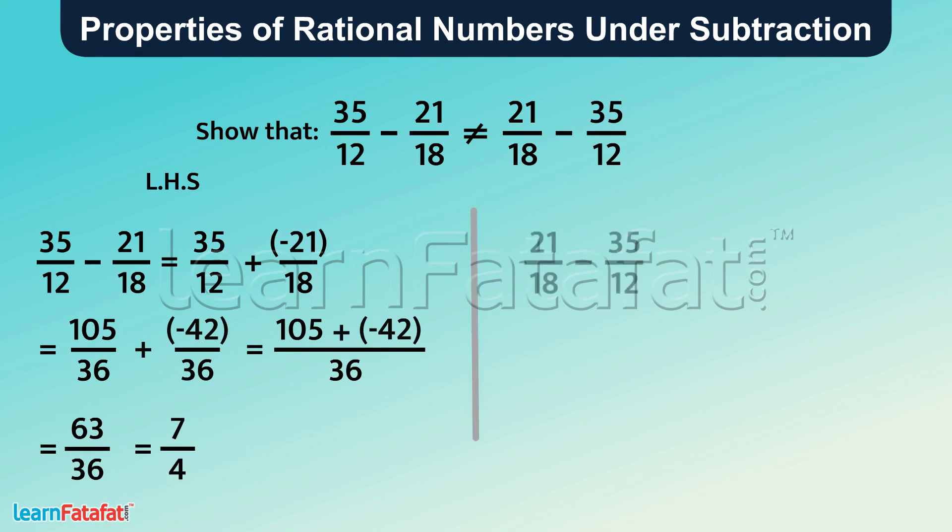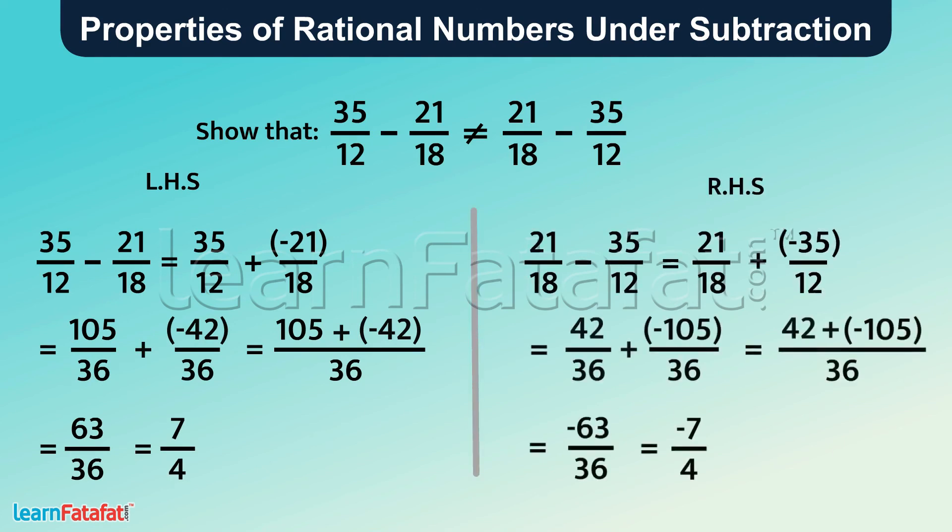Now let's solve the RHS. We can solve it in the same way. Here, left-hand side is 7 by 4 and right-hand side is minus 7 by 4, which are not equal.